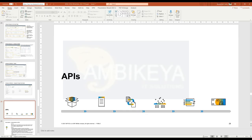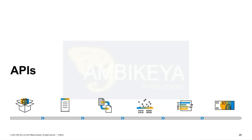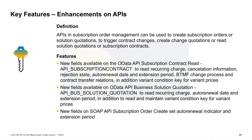Moving to APIs: for transactional processing there are three APIs which are particularly important. The subscription contract read API, where we added several new fields; the solution quotation API; and a SOAP API for order creation. When we build new functionalities, these fields are also exposed via these APIs. You can find these APIs in the API Business Hub at api.sap.com, where you can also see which fields are available on the APIs.